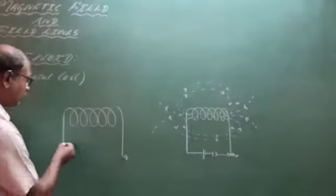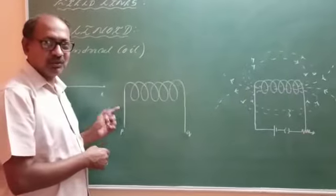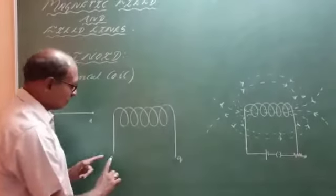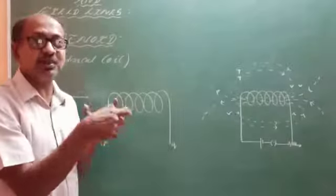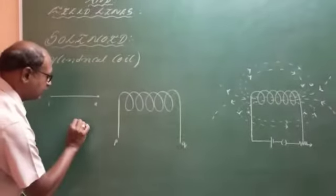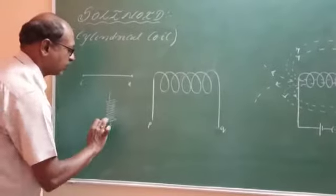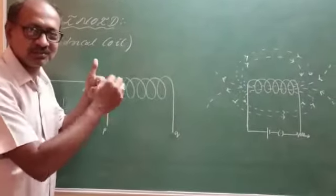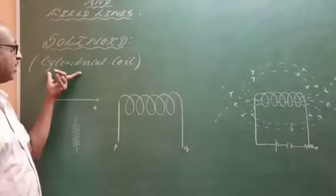Just take one conductor — P and Q will be just a conductor. Then you make that particular thing wound in such a way that it will form like this. This is the P side and this is the Q side. It looks like a helical spring. You might know what a helical spring looks like. This also looks like a spring, and it is having a number of rotations.